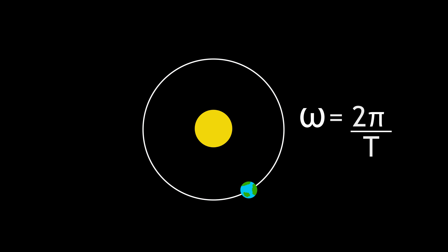We started by assuming that the Earth orbits the Sun in a uniform circle. This means that it rotates at a uniform angular velocity, omega, given by 2 pi over t.